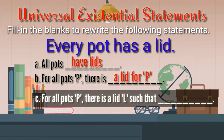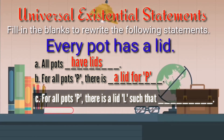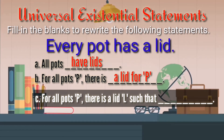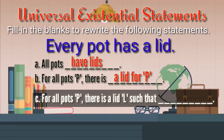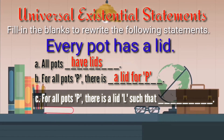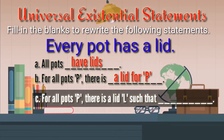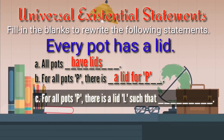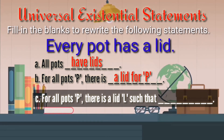The next one: 'For all paths B, there is a lead L such that blank.' Leave your answer in the comment section. Please don't forget to subscribe and like this video and share it with your friends.